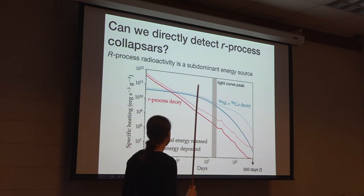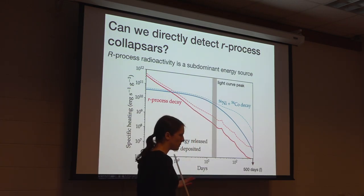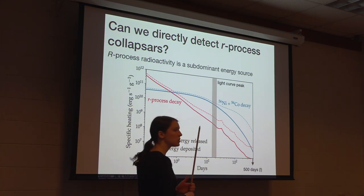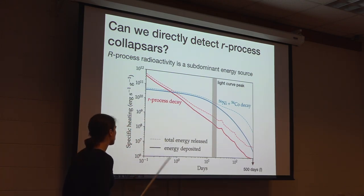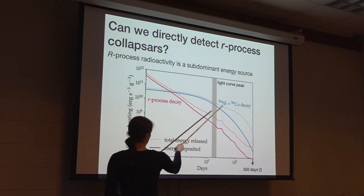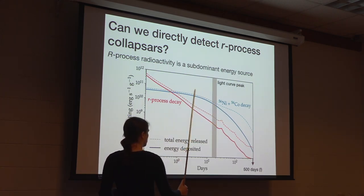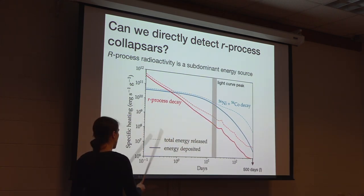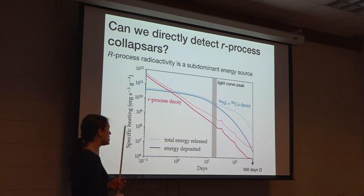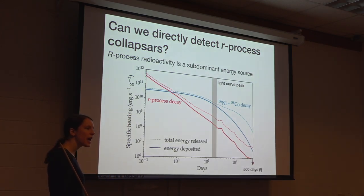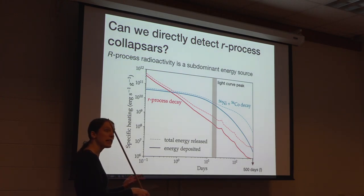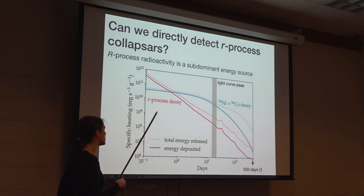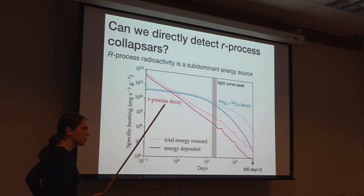One thing we might want to look at first is total luminosity—just reprocessed energy from radioactive decay. If we have a collapsar with nickel-56 powering the light curve and add an additional source of heat from R-process decay, we might be able to see that extra energy in the light curve. Unfortunately, that turns out not to be a very great diagnostic.